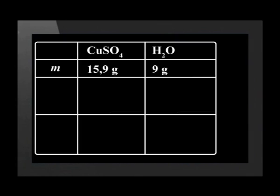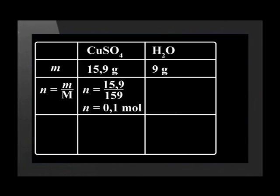Our next step is to convert these masses to number of moles. For copper sulfate, the molar mass is 159 grams per mole, so 15.9 divided by 159 is 0.1 mole. And for the water, the molar mass is 18, so 9 divided by 18 is 0.5 mole.